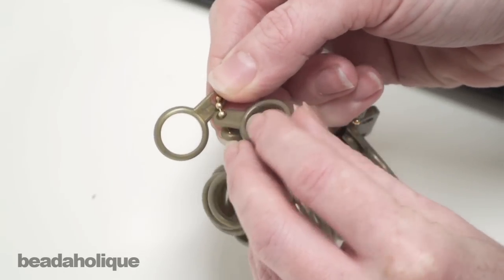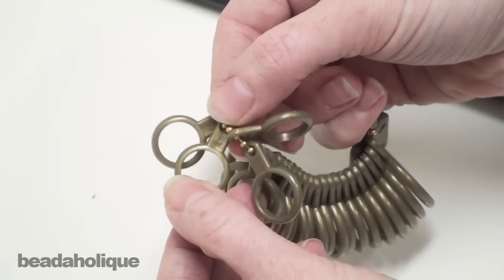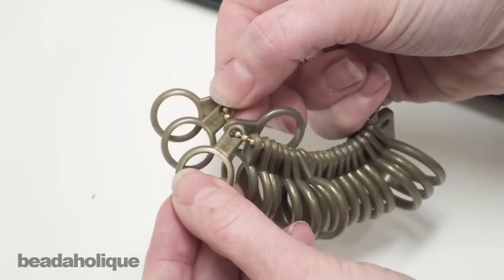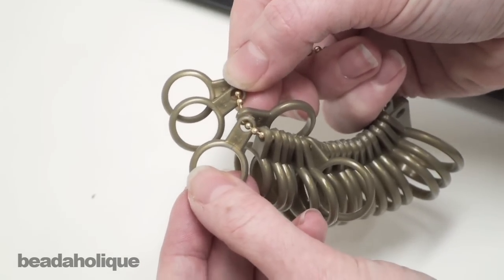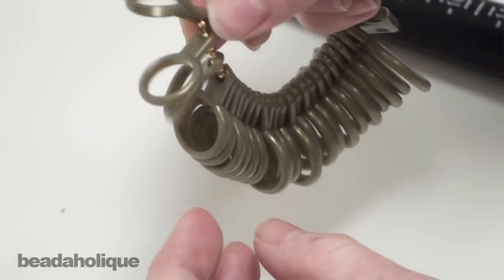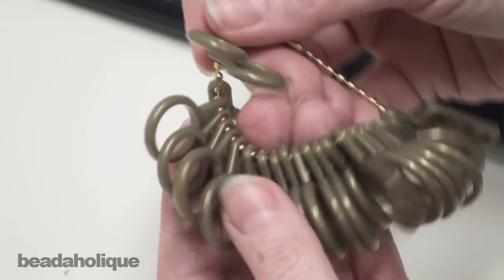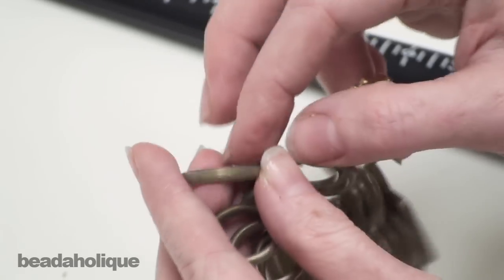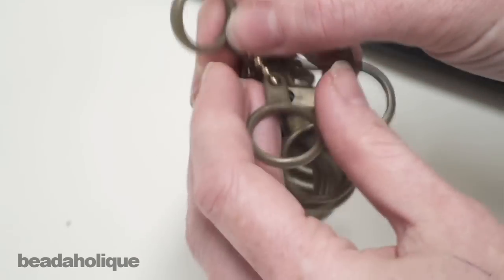So the one has a little one next to it and one and a half has a one dash next to it. Then it goes on to two and so forth. So what you're going to want to do to get a properly sized ring is you are going to want to find the circle which fits your finger best.